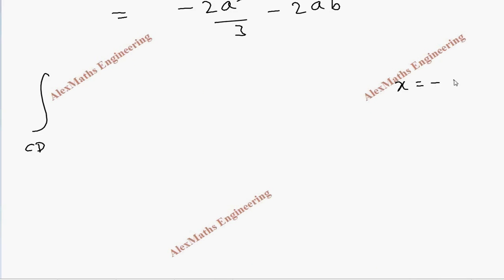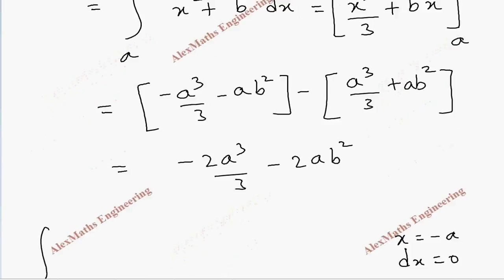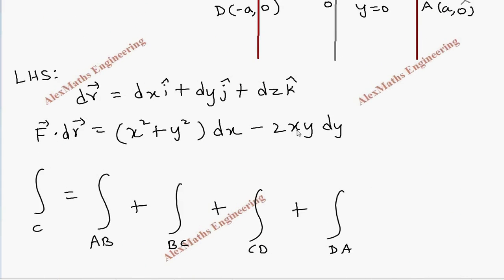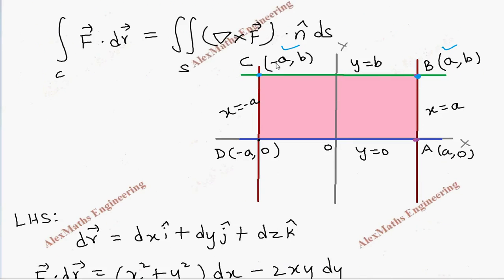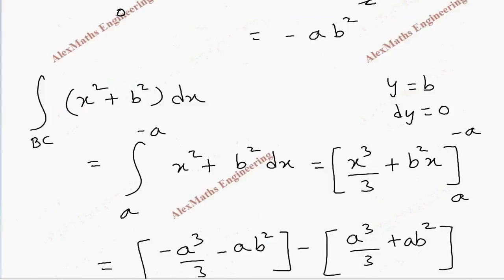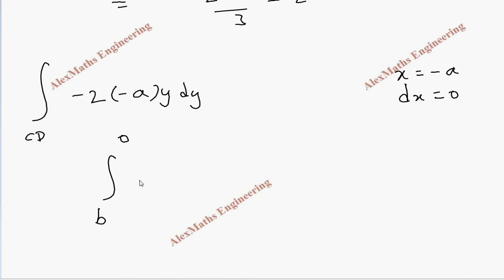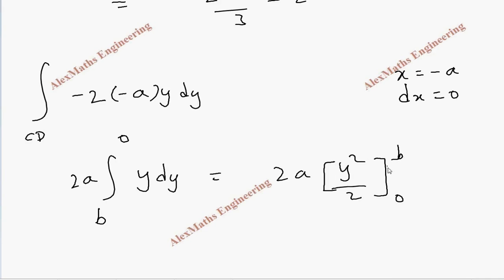For the integral over CD, the equation is x = −a, so dx = 0. The first part vanishes, leaving −2xy dy with x = −a, i.e., +2ay dy. The limit of y goes from b to 0, giving 2a·∫ᵇ⁰ y dy = 2a·[y²/2]ᵇ⁰ = 2a·(0 − b²/2) = −ab².